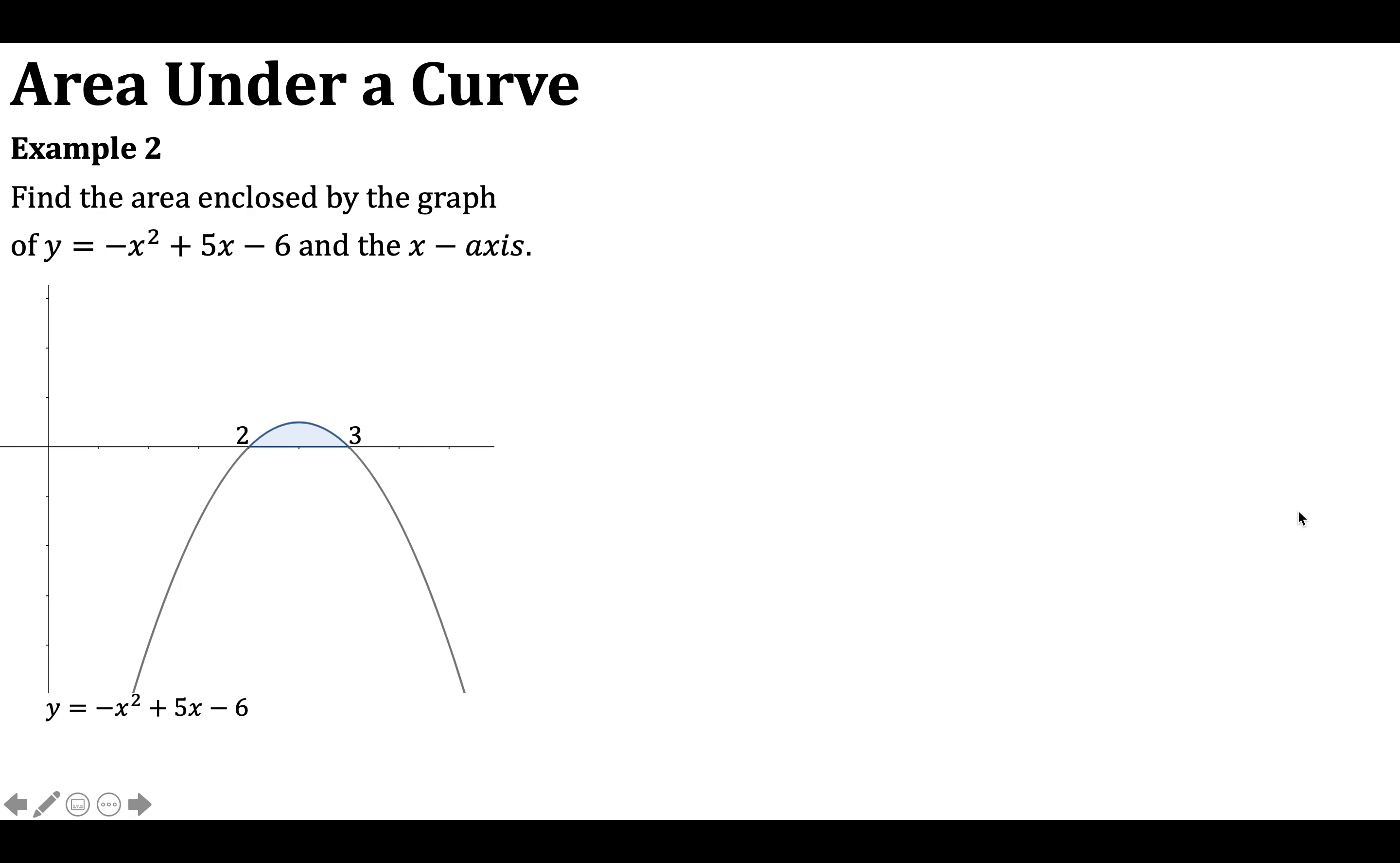Okay, welcome back folks. And we'll have a look at example 2 now. We want to find the area enclosed by the graph of y equals negative x squared plus 5x minus 6 and the x-axis. So we can see that shaded area there. That's the area we're being asked to find between the curve and the x-axis. And we can see that we have 2 and 3 on the x-axis. That's where the curve is intersecting in the x-axis here. So that provides us with our limits for integration. So we've got the integral between 2 and 3 of negative x squared plus 5x minus 6. And we're integrating with respect to x.